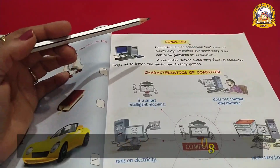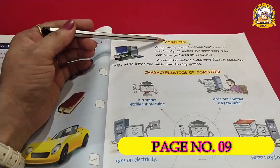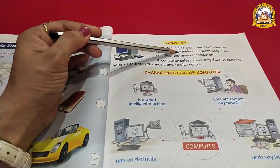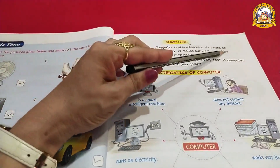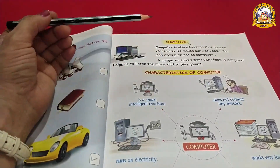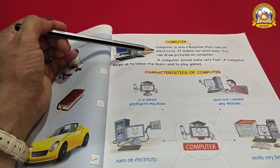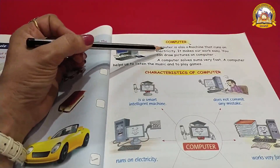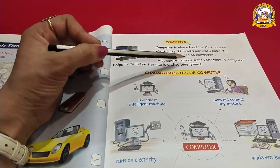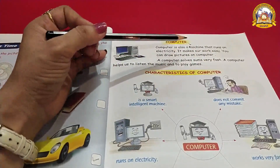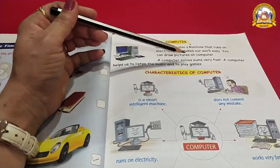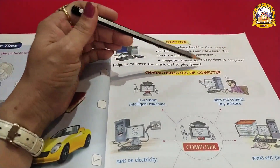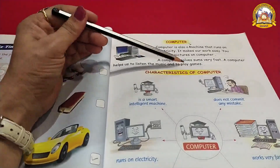Page number 9 — Computer. Computer is also a machine that runs on electricity. It makes our work easy. You can draw pictures on a computer. Computer is a machine that runs on electricity and makes our work easy. We can do drawing and pictures on it. A computer solves sums very fast. A computer helps us to listen to music and to play games.